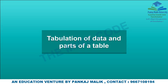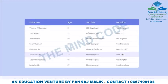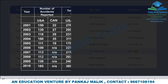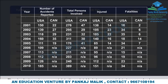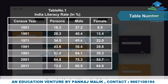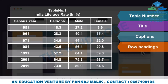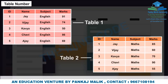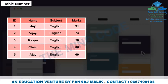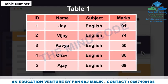Tabulation of Data and Parts of a Table: Before making a table, it is important to learn the important parts of a table. A good table should have the following parts: table number, title, captions, row headings, body of table, and source. The table number helps to distinguish between tables and is used for identification, placed at the top or beginning of the table.